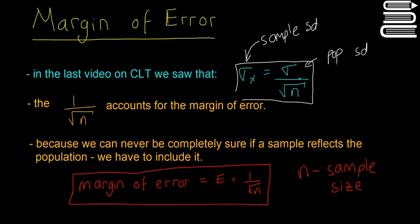So this is this box here, and that divided by square root of n accounts for the margin of error.